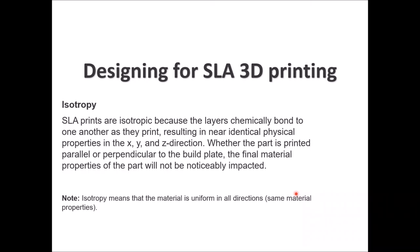SLA printing is an isotropic process, meaning the material is uniform in all directions. Because the layers are chemically bound to each other during printing, the physical properties in x, y, and z directions are almost identical — whether you print the part parallel or perpendicular to the build plate, the final material properties will not differ in a noticeable way.